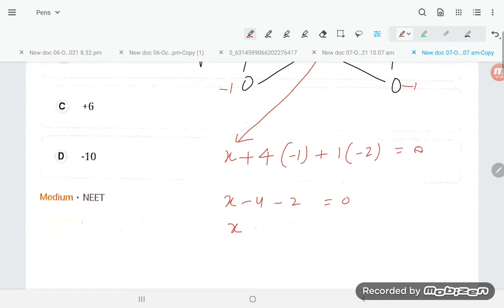So x is equal to plus 6. The correct answer is option C.